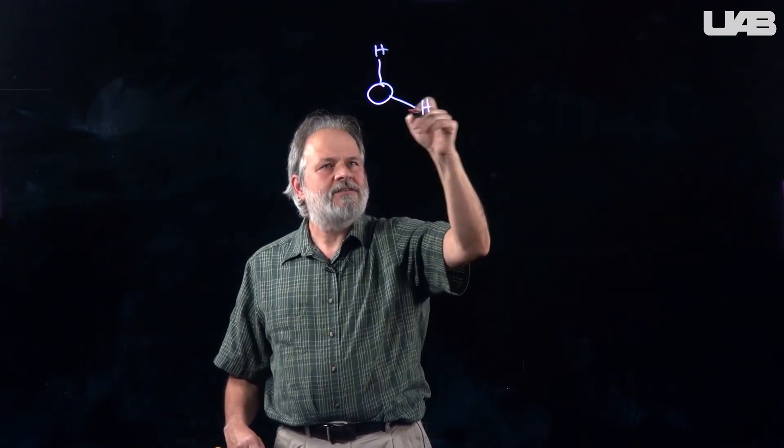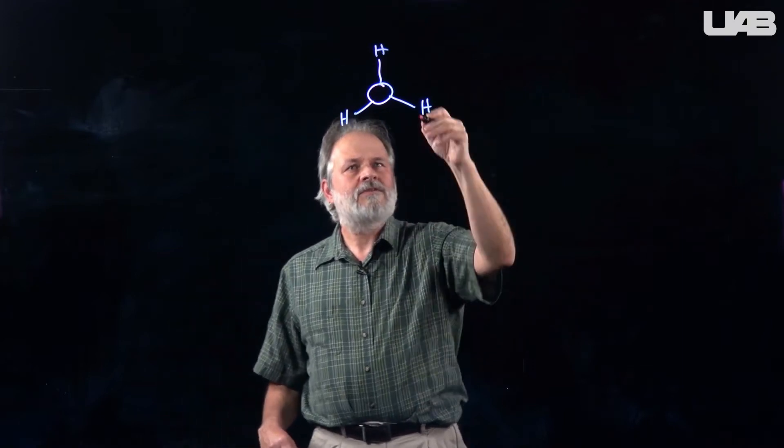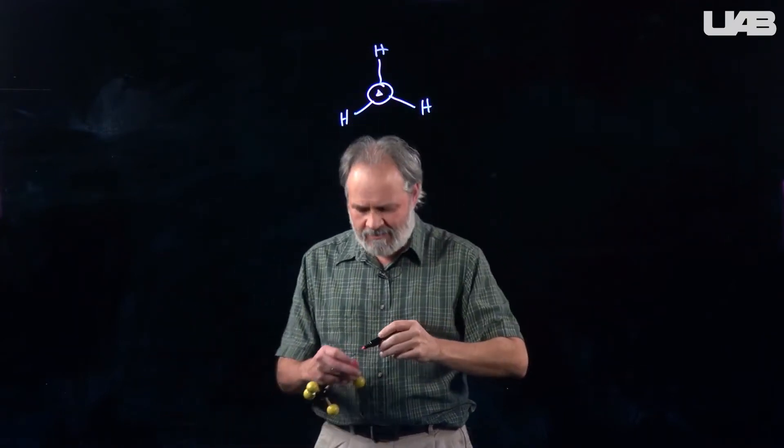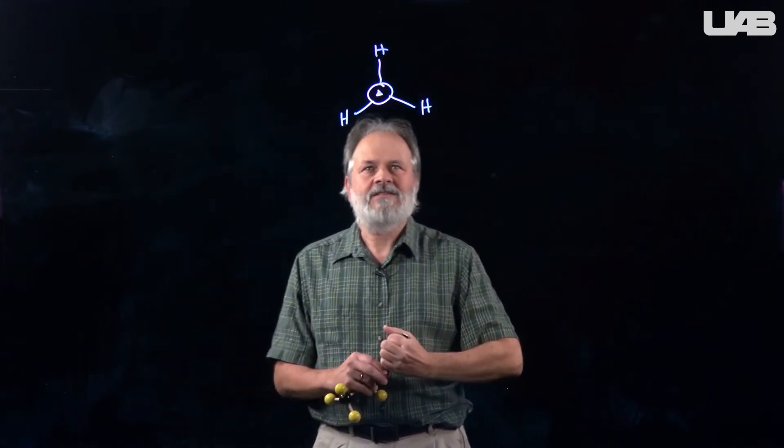So we're going to do a Newman projection of ethane. And so the C3 axis is sometimes denoted by a little triangle, since a triangle also has a three-fold rotation axis.